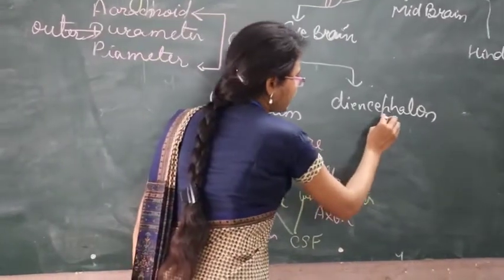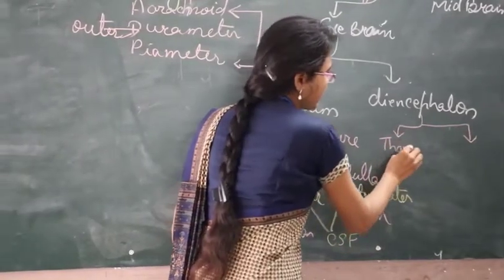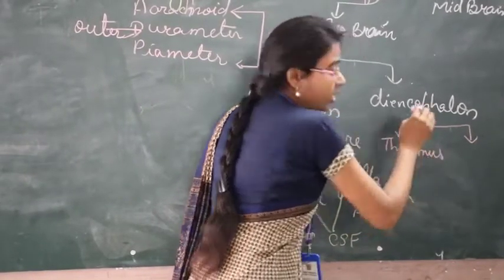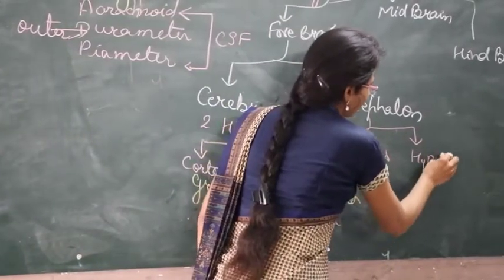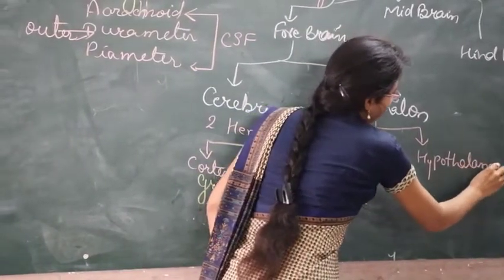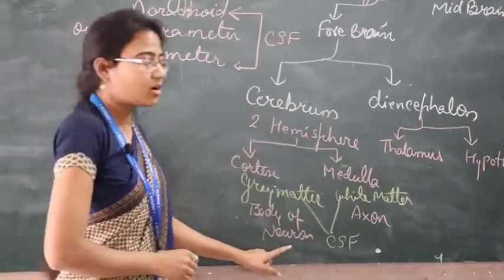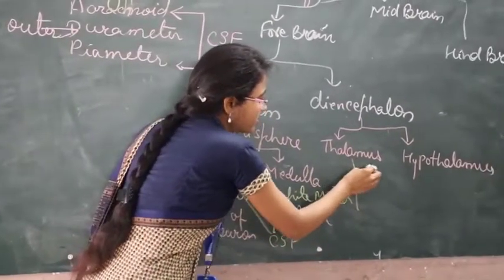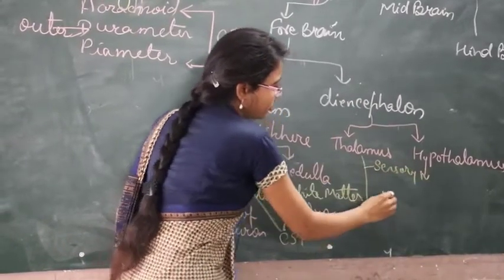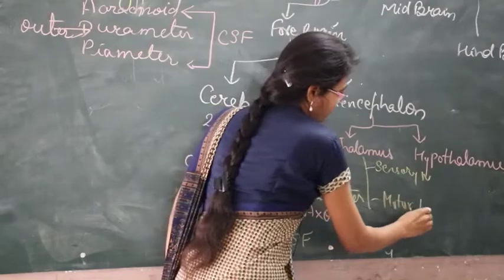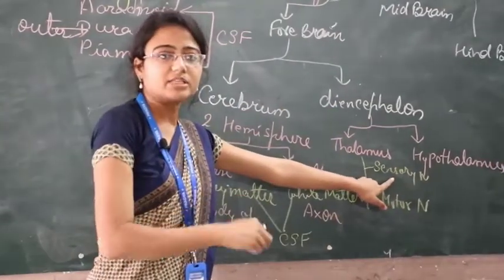Diencephalon comprises two lobes: the upper part is the thalamus and the base of the thalamus is known as the hypothalamus. The thalamus is related to two types of nerves — sensory nerves and motor nerves. The motor nerves convey messages and the sensory nerves receive messages.